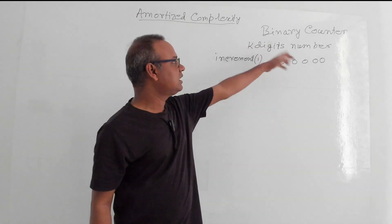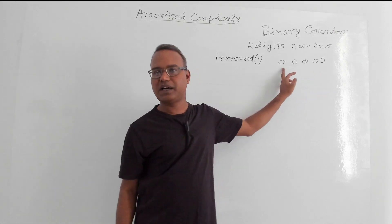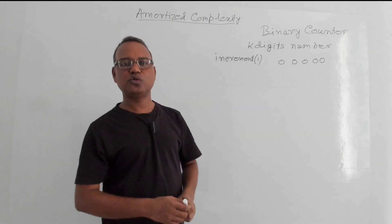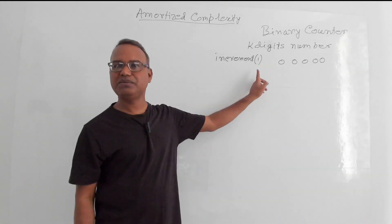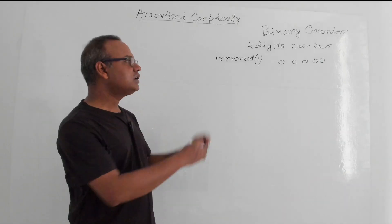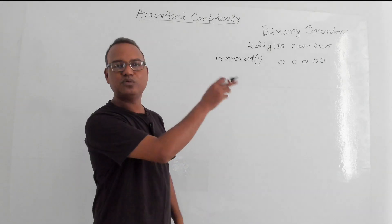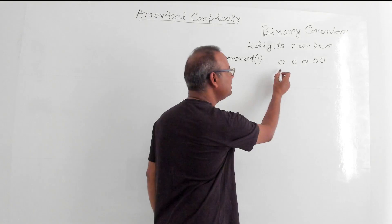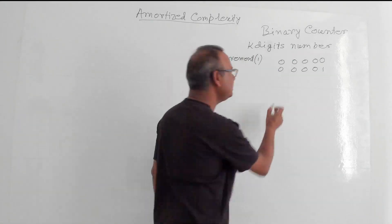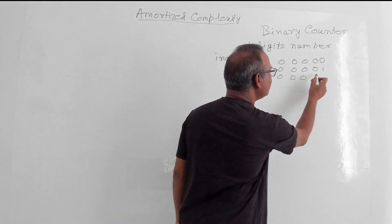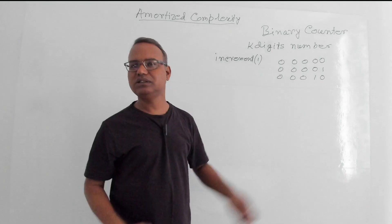Let's assume here is a K-digit binary counter, so there are K number of digits. I have taken 5 for this example. The single operation here is called increment by 1. Every time I call this increment operation, it is going to add 1 to the counter value. So the next number will be 00001, then 00010, and so on. In this way we perform the increment operation.